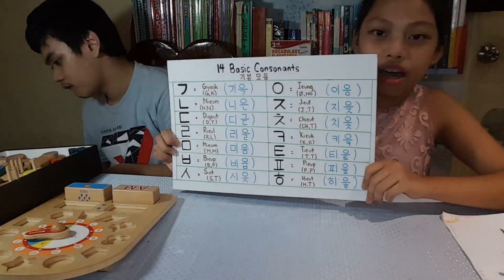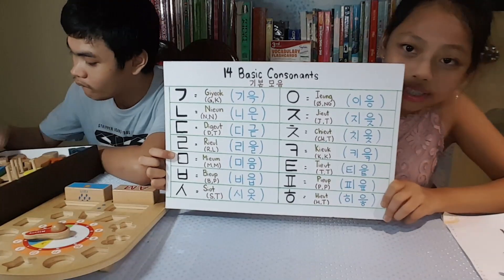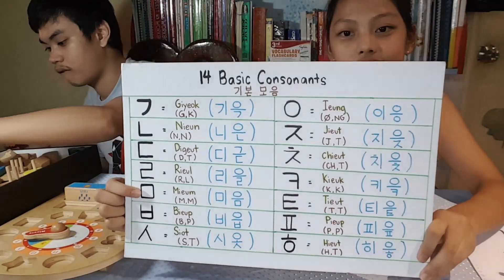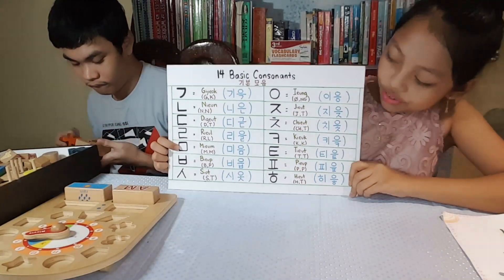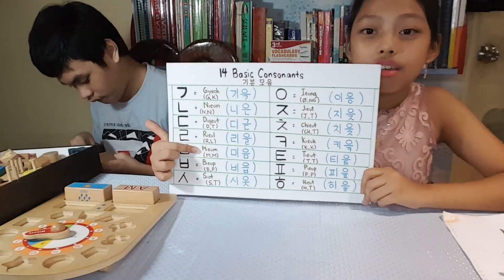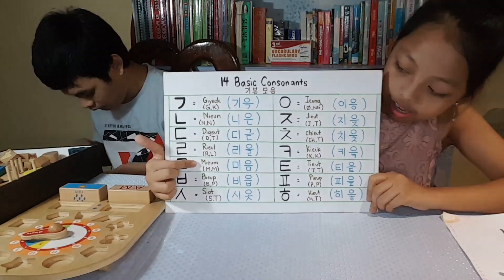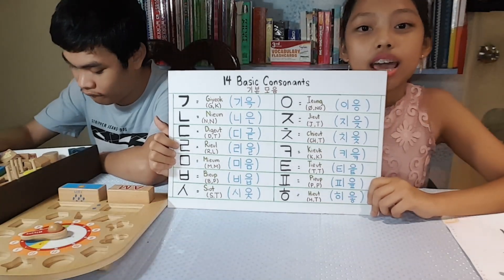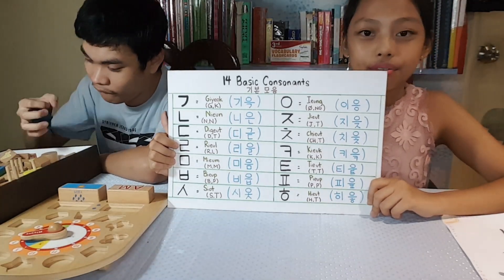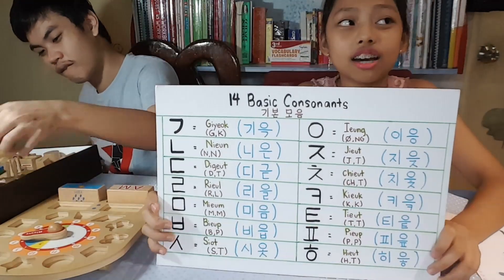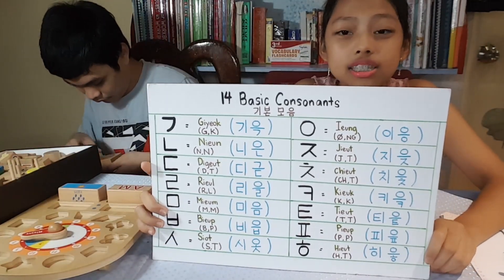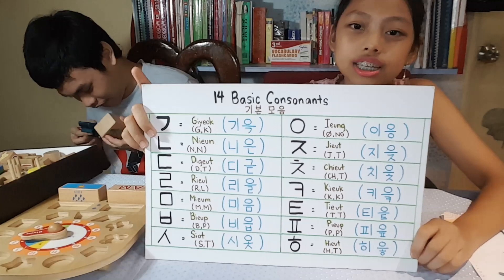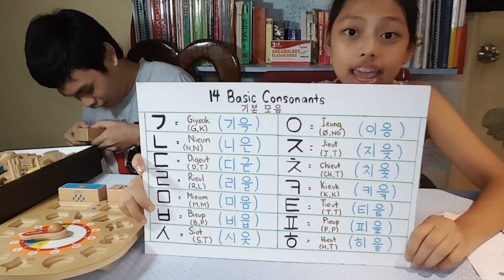The next basic consonant sounds like 'Ma.' Mi-un. This is the Korean alphabet character. And over here, we have Mi-un which is the romanization name, and over here we have the Hangul name. The consonant Mi-un is M sound in the initial and M sound in the final. Like the consonant Ni-un, it is still M sound whether it is in the beginning or in the end.